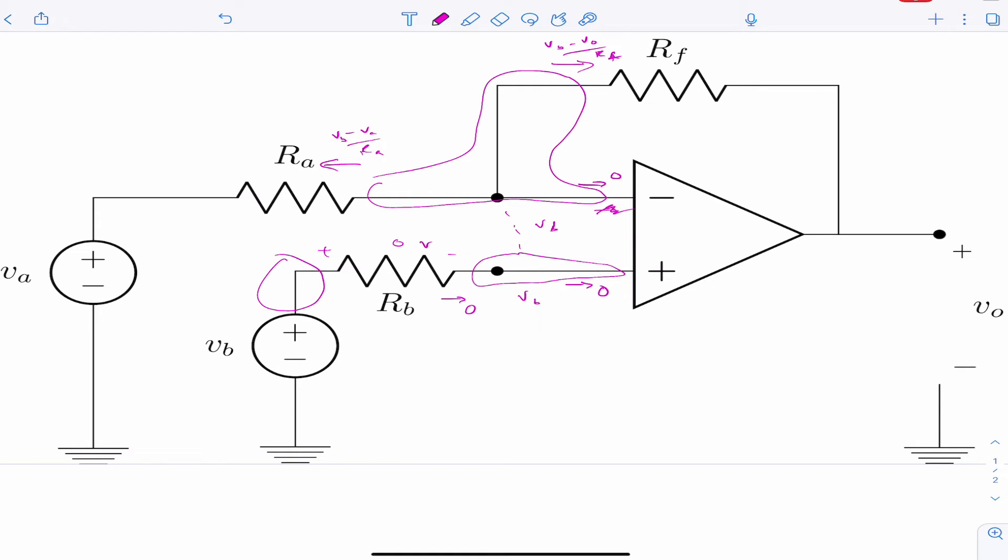So we can write that in one equation now. And I'm going to push the Vo over Rf to the right-hand side. And I can group terms, like there's a Vb, which is multiplied by 1 over Ra, plus 1 over Rf. And then there's a Va, like this.